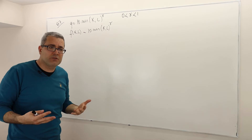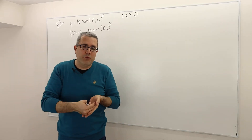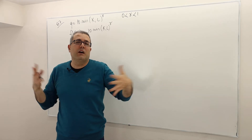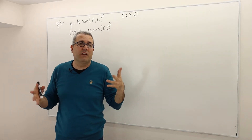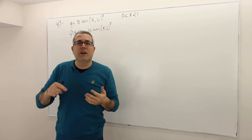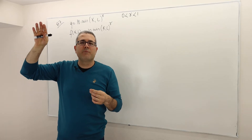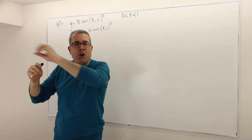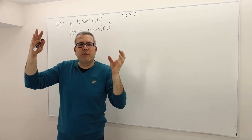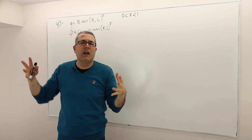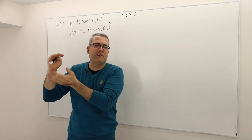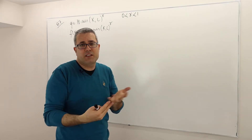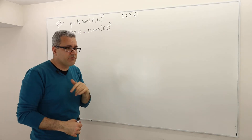In reality, we do have decreasing returns to scale: the more input I put in, the output level increases, but when I double my inputs I won't be able to double my outputs — maybe only 1.5 times more output. So there's going to be some sweet spot of input levels. The bottom line is that for technical reasons, your production function should be either constant or decreasing returns to scale.